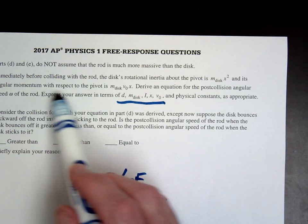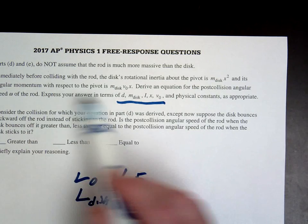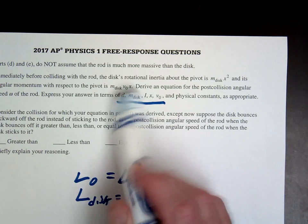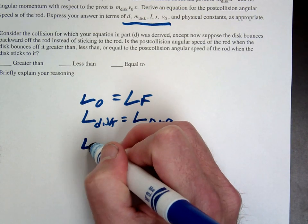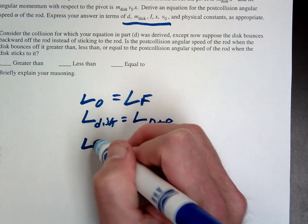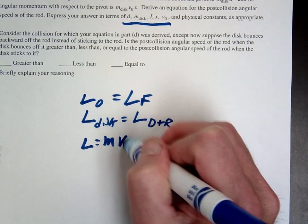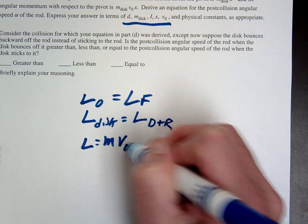So they actually give you the L for the disc. Angular momentum is M times V0 times X. So this is going to be L equals M times V0 times X.